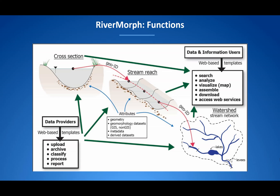The idea is to have all data and information connected through a framework that uses the River Network as the skeleton, as shown on the bottom left. Here you see a cross section that is connected to a reach, which is then connected to a network, and which is then connected to the watershed. RiverMorph will host or provide access to data from multiple sources through a common entry point. It will allow users to upload data, access stored data using basic query tools, and visualize the data. It will enable seamless integration across datasets irrespective of their location, and will enable building of customized applications for routine management or exploratory scientific investigations.